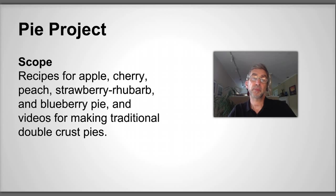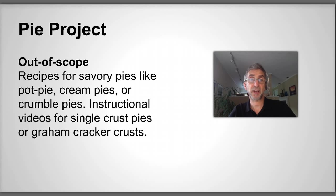The scope is that I'm only going to include recipes for apple, cherry, peach, strawberry, rhubarb, and blueberry pie. And videos for making traditional double crust pies. In the out of scope, I'm not talking about savory pies like pot pie, cream pies, or crumble pies. Out of scope are single crust pies or graham cracker crust. This is traditional double crust pie crust.